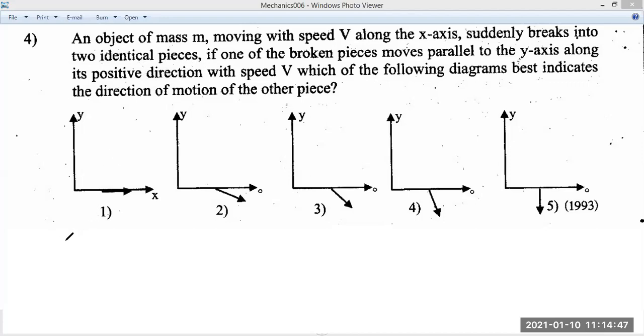An object of mass m moving with speed v. An object of mass m is moving with speed v. This is just before the explosion or the separation, let's say.